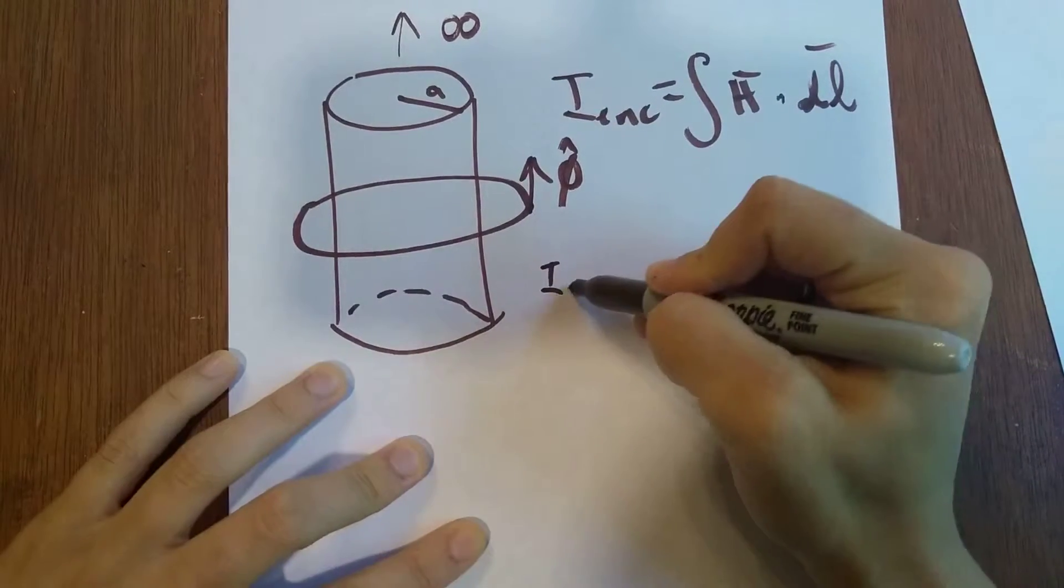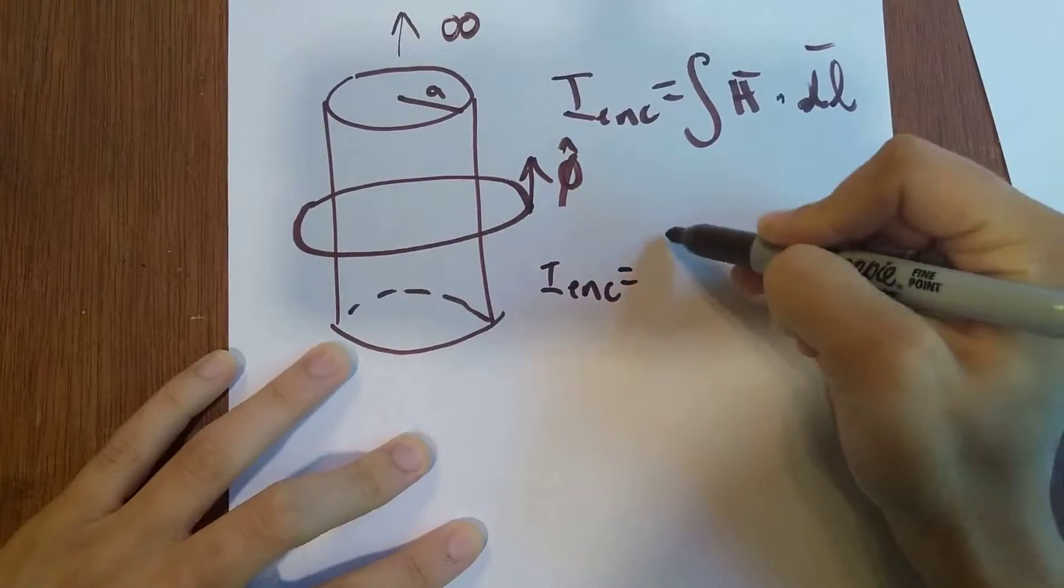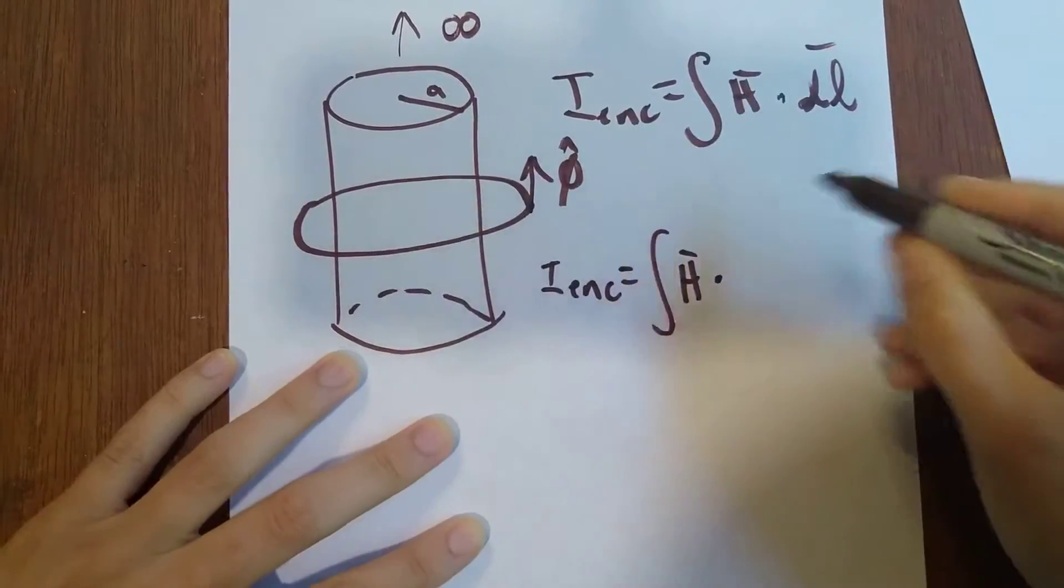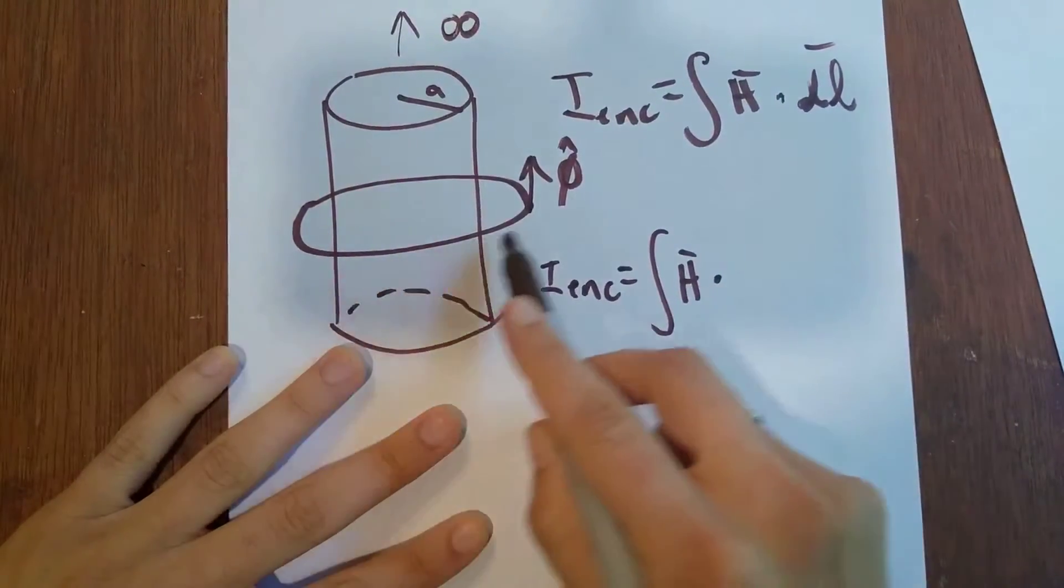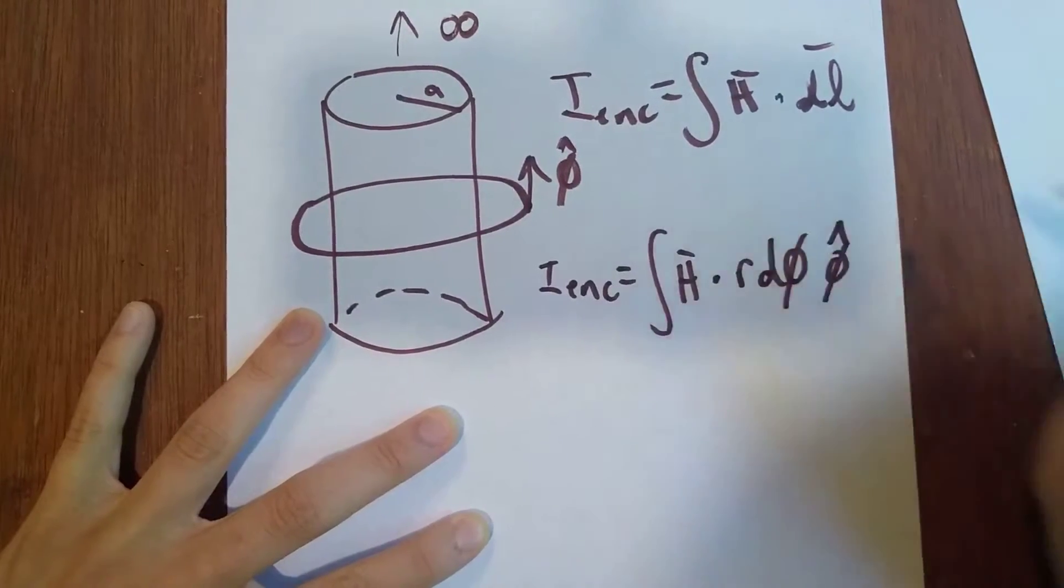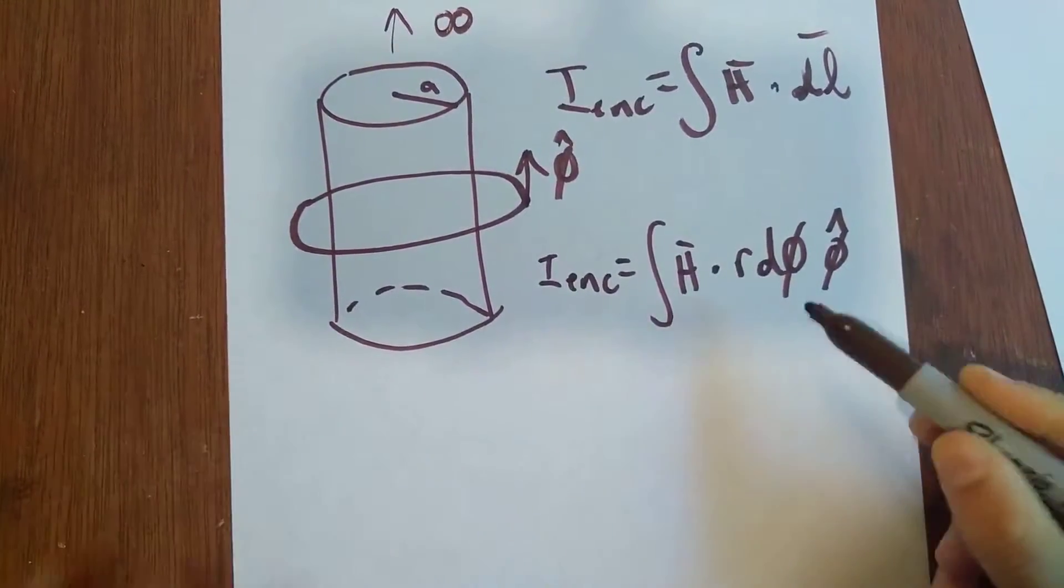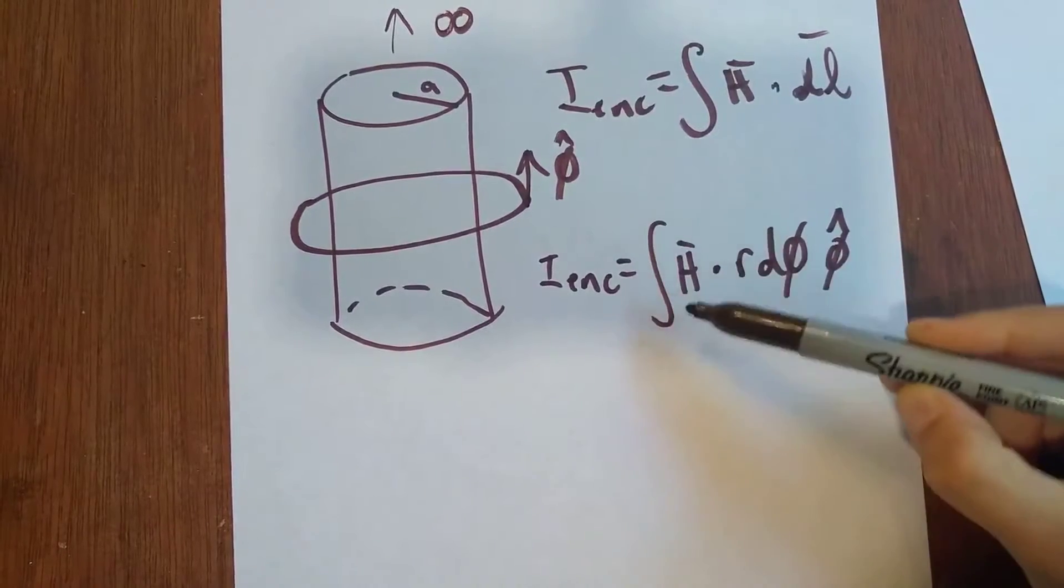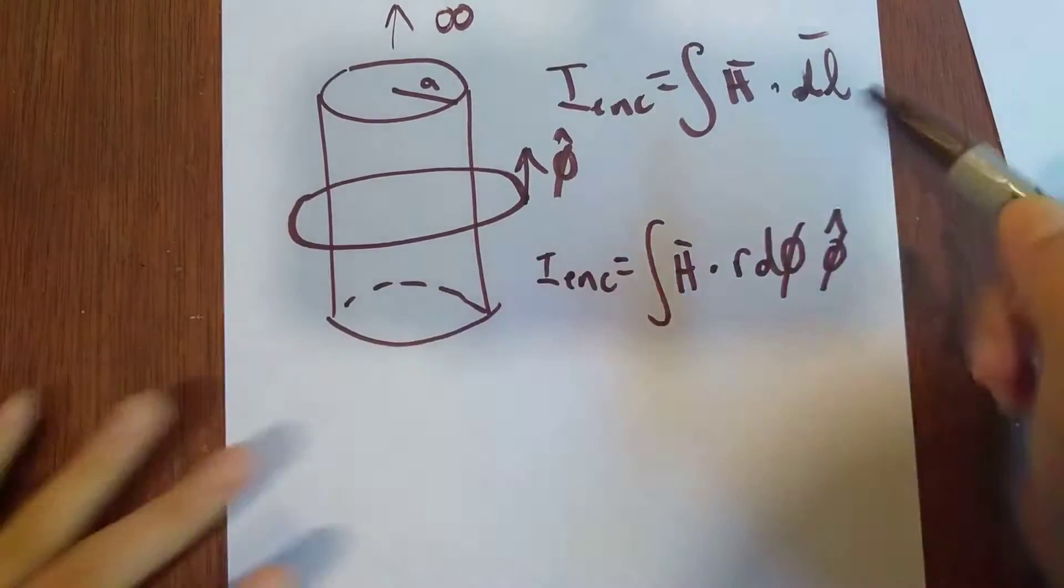So our I enclosed is going to equal H, our DL is the path of this right here. So it's going to be R D phi phi hat. Okay, and the bound here for phi is going to be 2 pi.